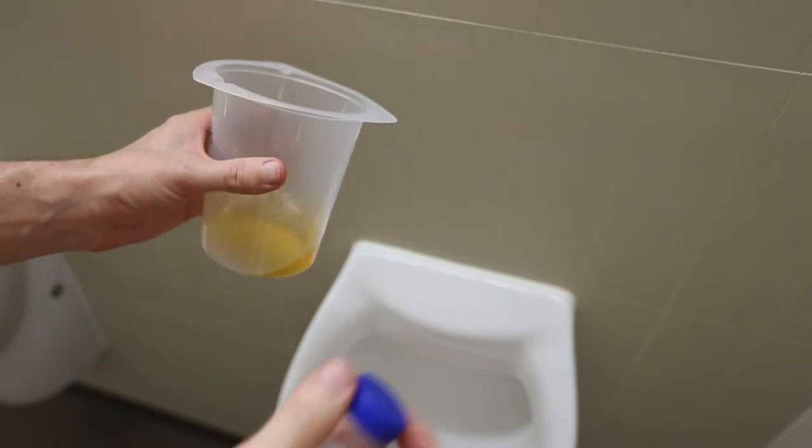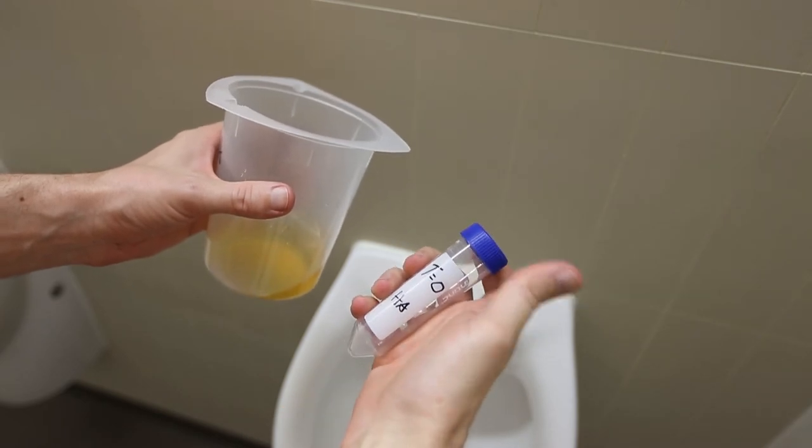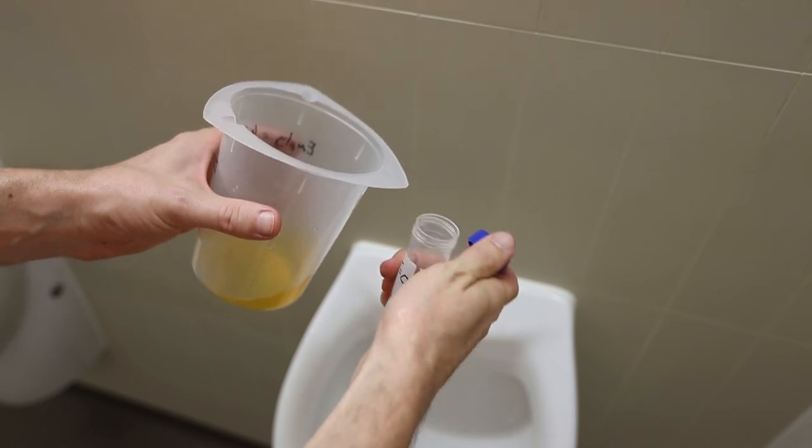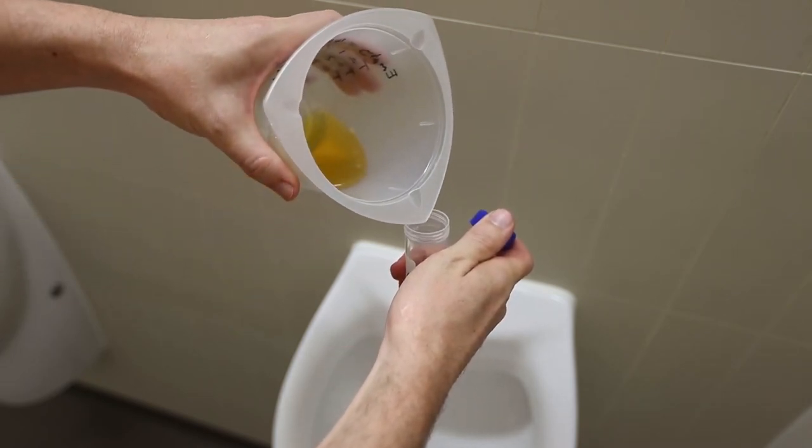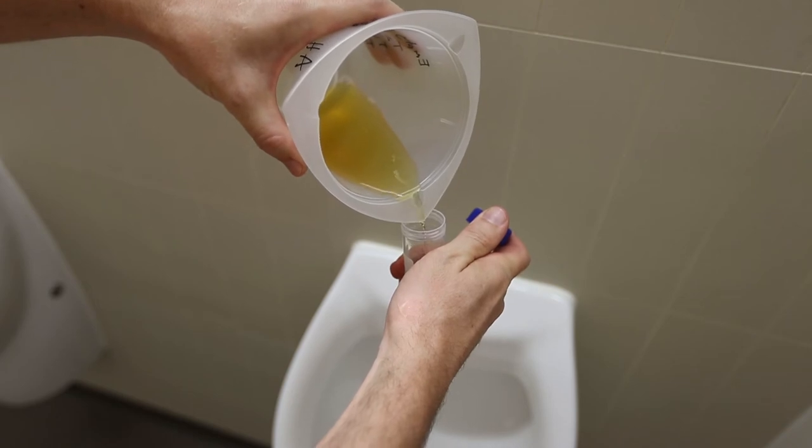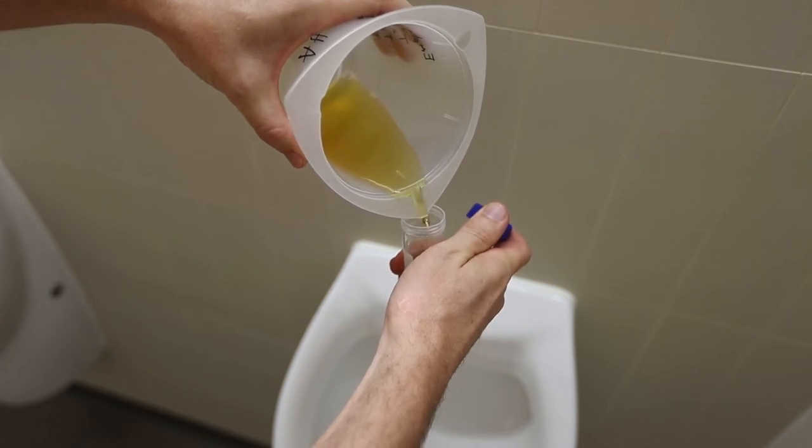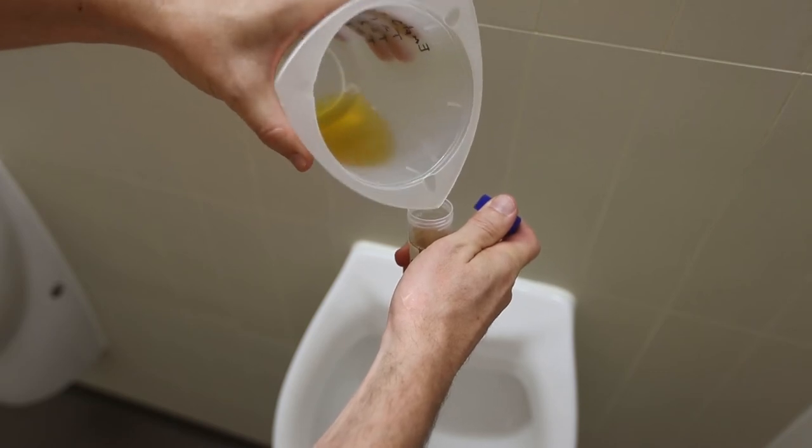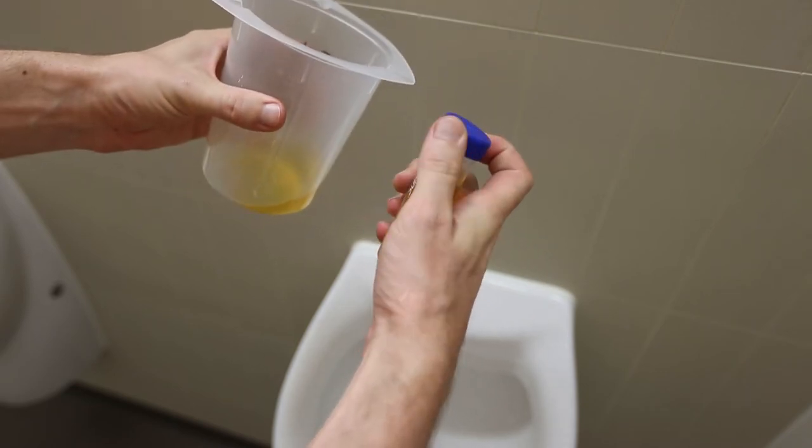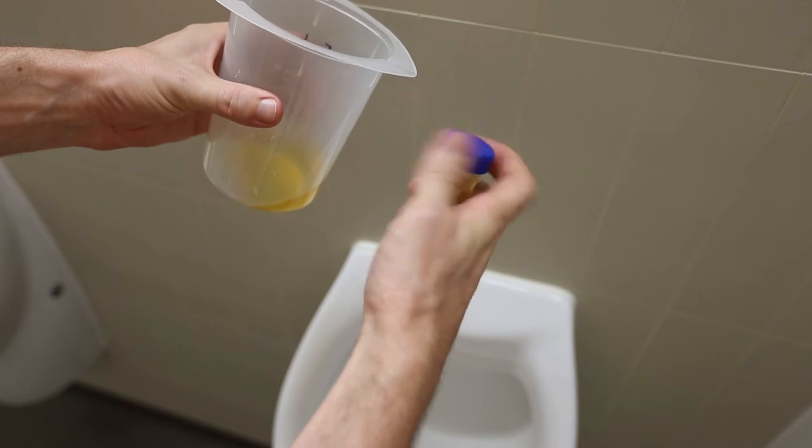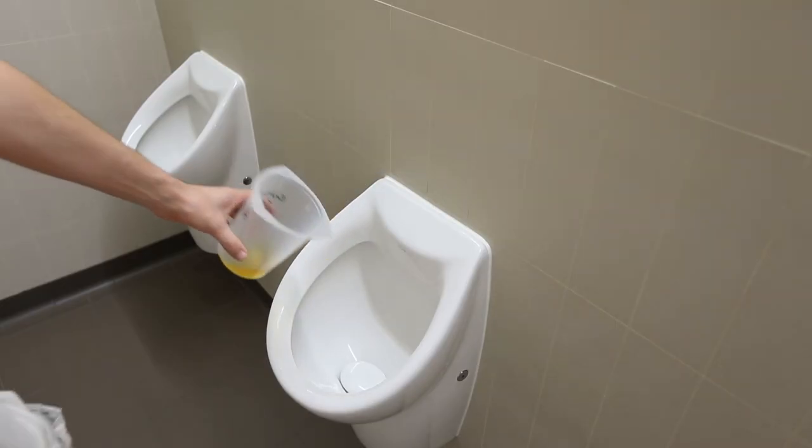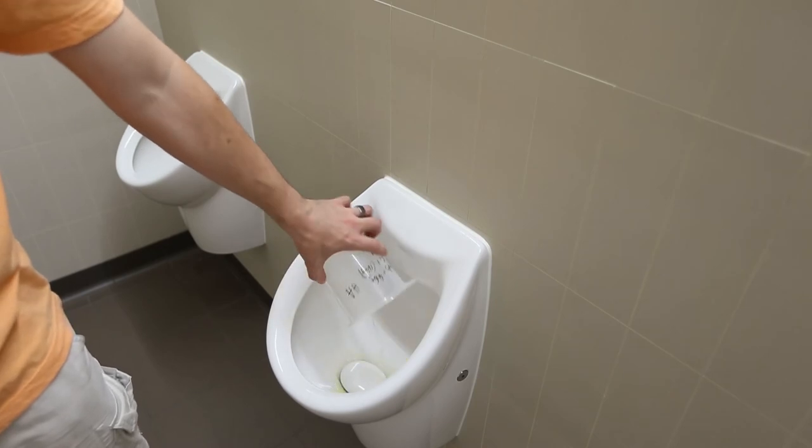Once you have measured the volume of your urine, pour approximately 45 ml of urine into the 50 ml falcon tube. Make sure you recap the tube tightly to prevent spills on the way back to the lab. Then dispose of the remaining urine into the toilets.